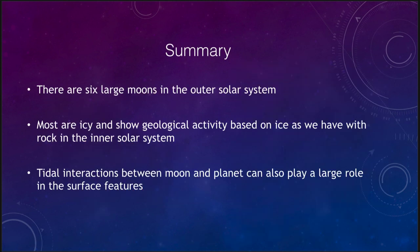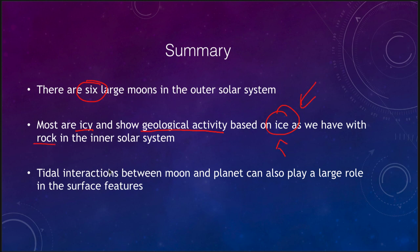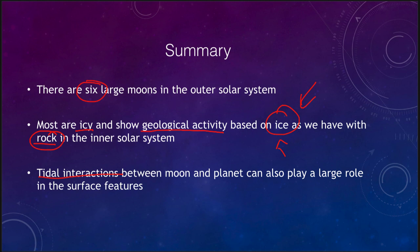In summary: there are six large moons in the outer solar system — four around Jupiter, one around Saturn, and one around Neptune. Most are icy and show geological activity based on ice, just as we have volcanic activity based on rocky materials in the inner solar system. Tidal interactions between the moon and its planet play a large role in the surface features we see. That concludes our lecture on the large moons of the outer solar system — we'll be back next time for another topic in astronomy.